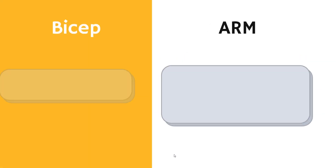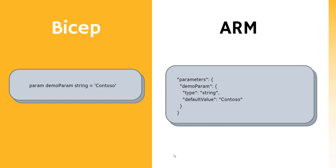Here's an example of Bicep syntax where you can see the differences. With Bicep, I can declare parameters with just a single line, whereas the equivalent in an ARM template takes several lines. Even if you are new to programming, you will find it much less difficult to understand parameter declarations in Bicep compared to ARM templates or JSON. This reduces the effort to write your infrastructure.